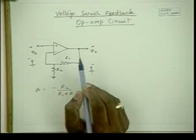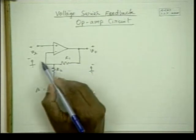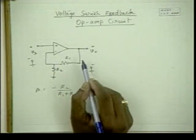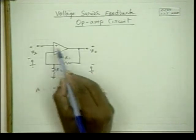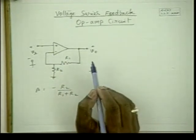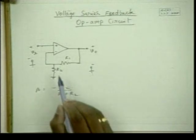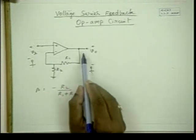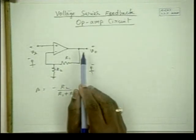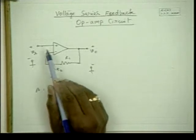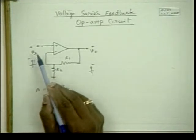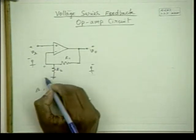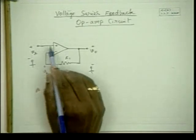The feedback voltage is given to the negative terminal. Between the negative terminal and the output it is negative gain, whereas between the positive terminal and the output it has a positive gain. Hence beta is R2 by (R1 + R2) and A is infinity. It is voltage series feedback because the output voltage is sampled and applied in series to the input signal Vs, with the feedback voltage Vf subtracted from Vs.